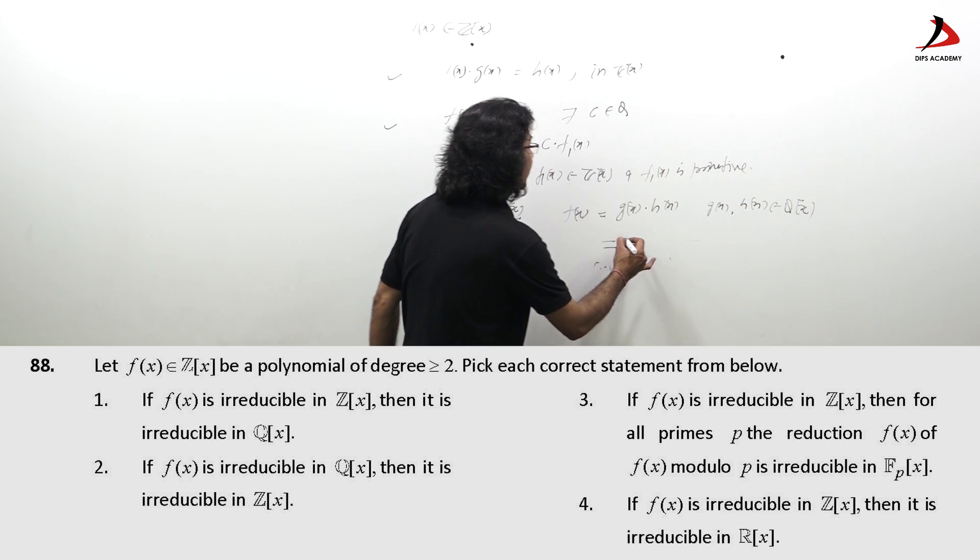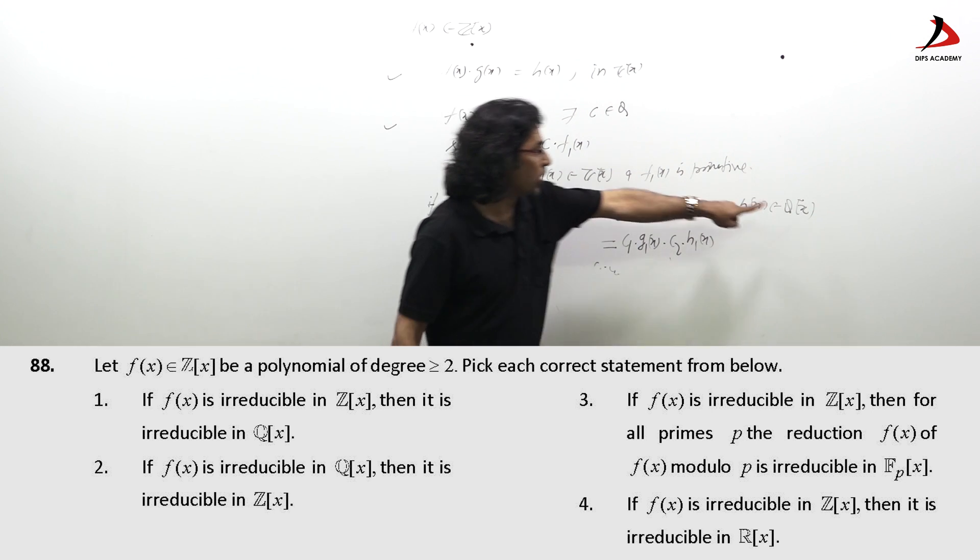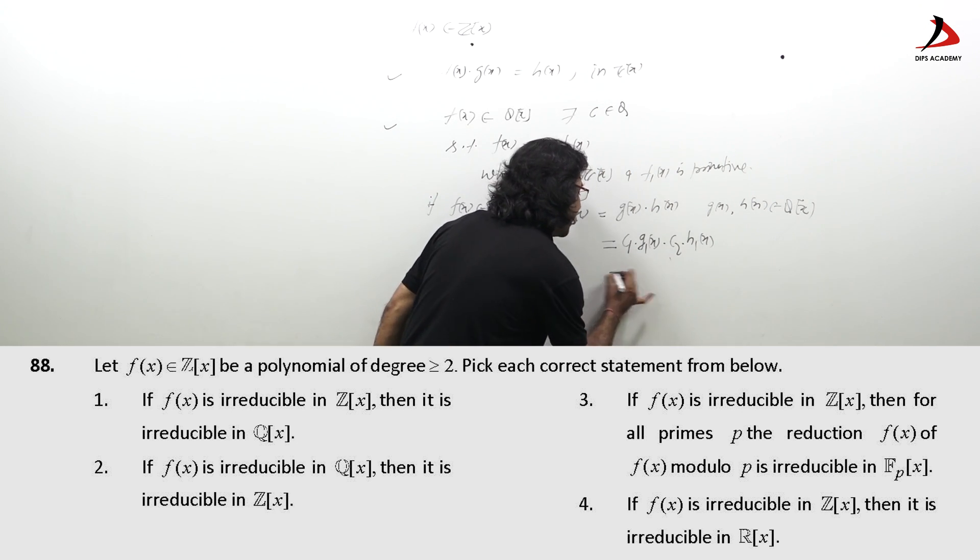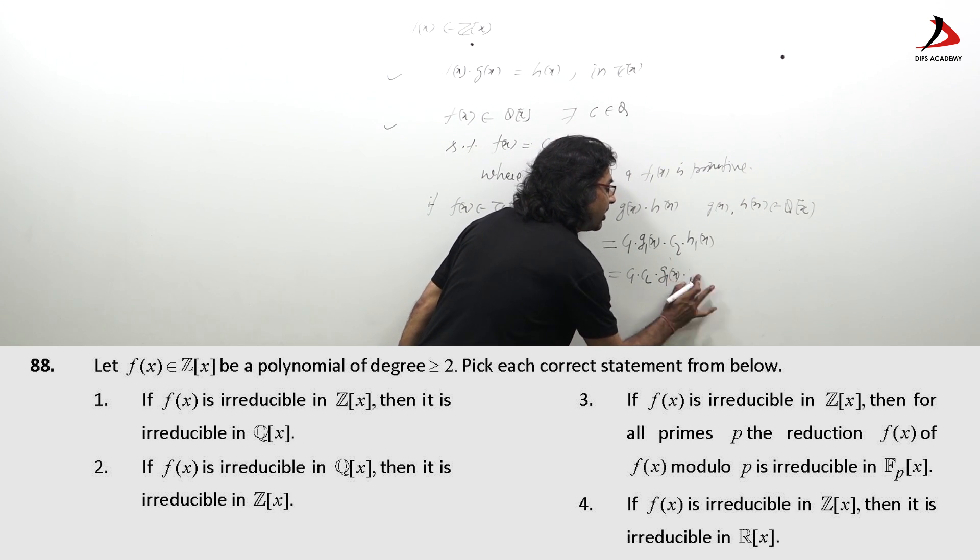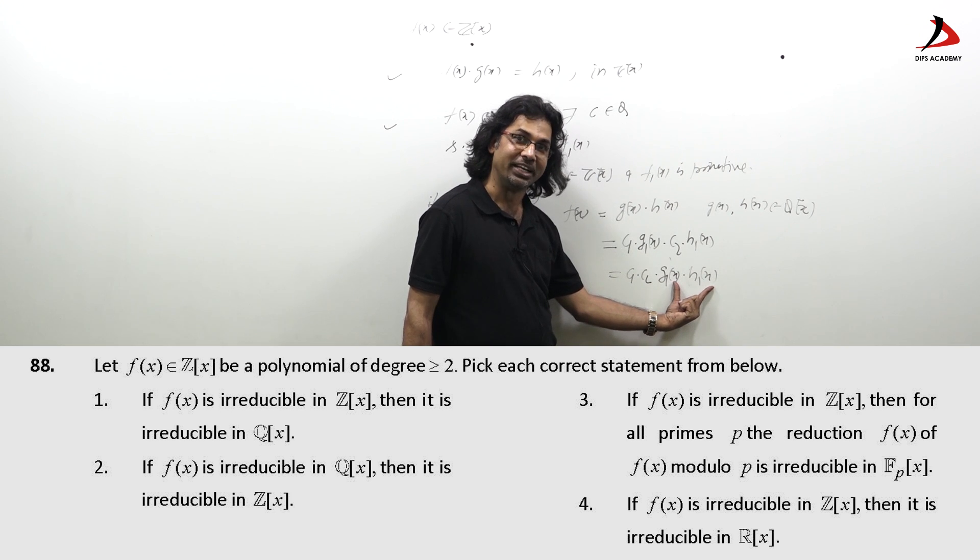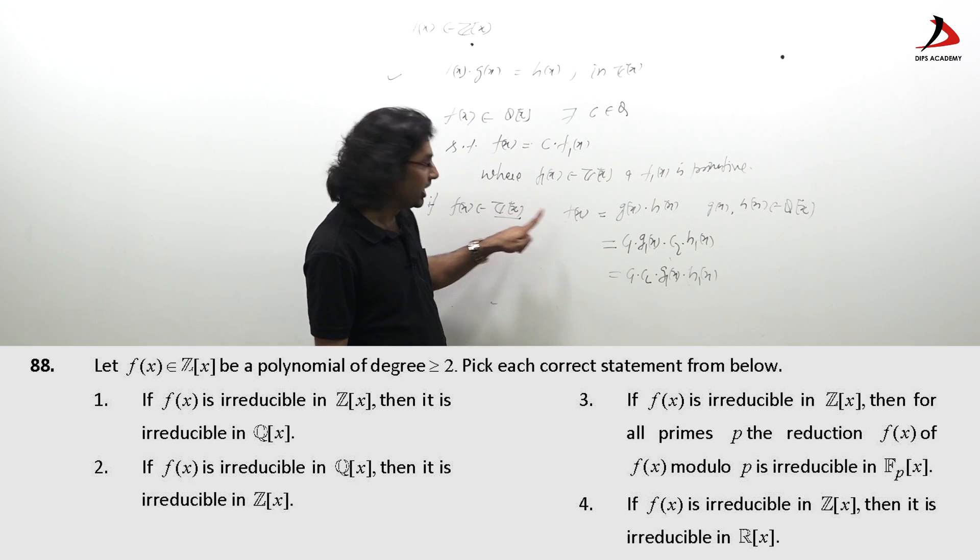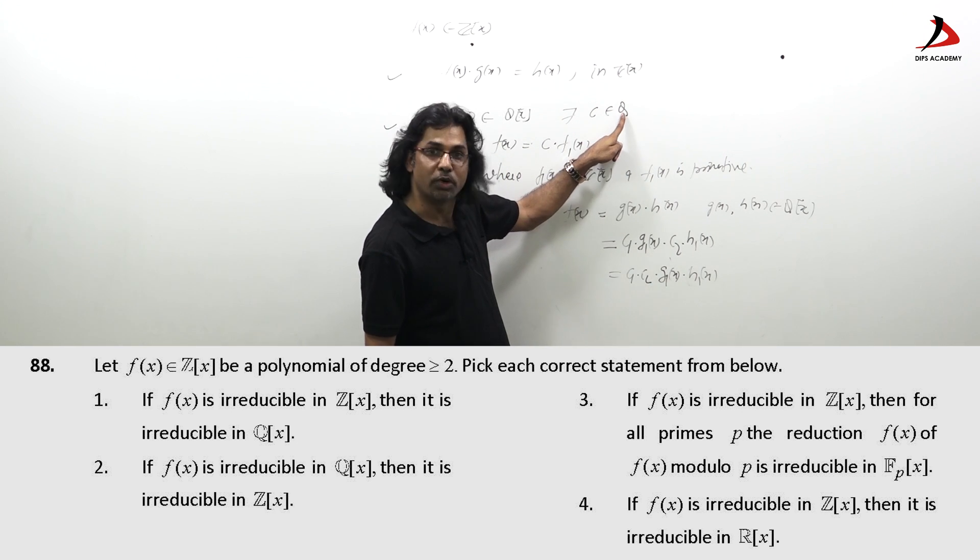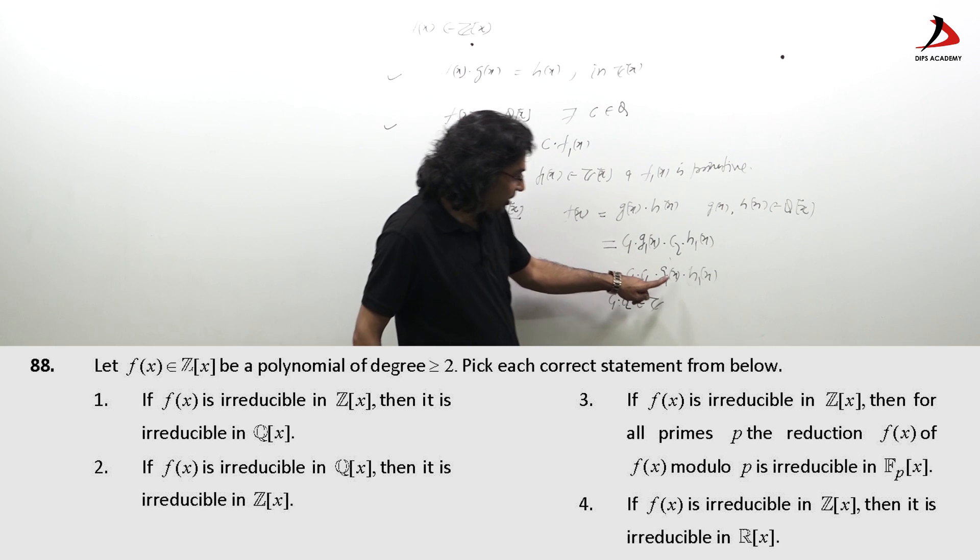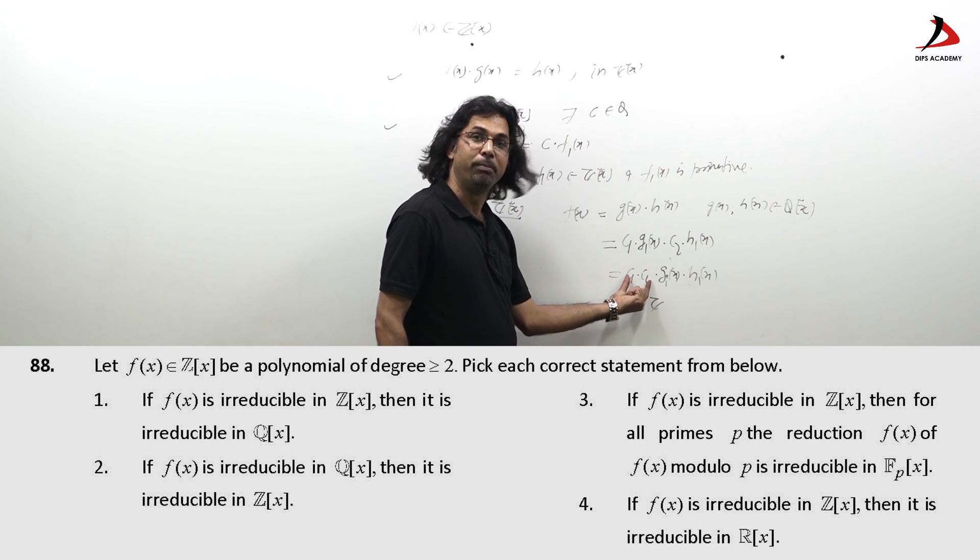But this can be written as c1 g1(x) c2 h1(x) by lemma 2. g is member of Q[x], then I can always find a rational number c1 g1(x) and h1(x) are primitives in Z[x]. And this implies c1 c2 g1(x) h1(x). Now again by lemma g1(x) h1(x) this is product of two primitives hence this has to be primitive. This is over Z, this is over Z, product of two primitives. Now this f is member of Z[x]. They are primitive, nothing can be taken out as common to make this integer.